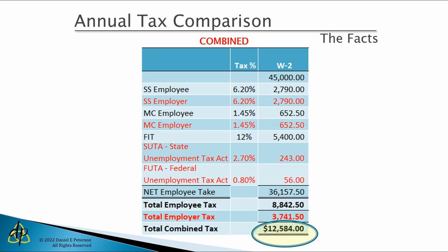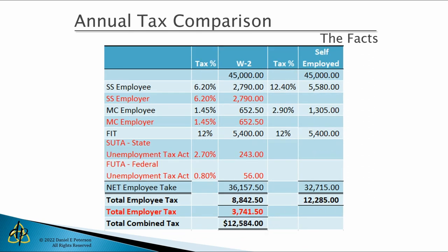So that's what happens as an employee. The net take-home pay for the employee is $36,157.50. If you happen to be self-employed — assuming no expenses and you charge the same amount as you made as an employee — you'll find yourself with less cash in the bank. As a self-employed individual, you're responsible for paying both sides of Social Security and Medicare taxes: 12.4% for Social Security and 2.9% for Medicare, whereas as an employee, half was your burden and half was the employer's.